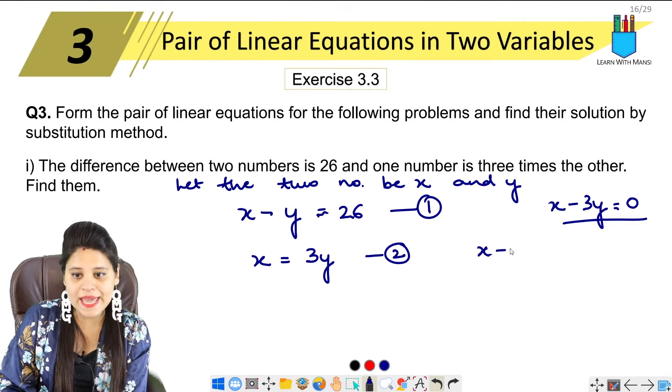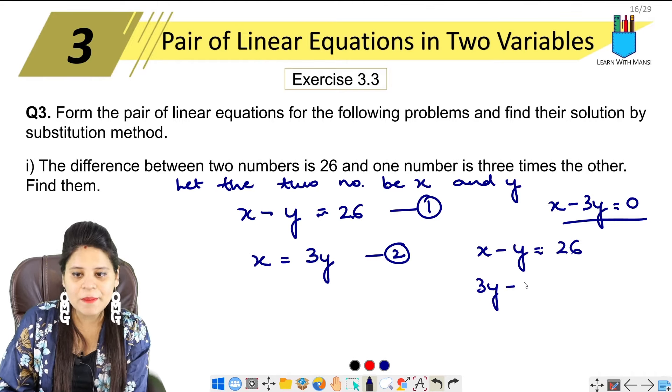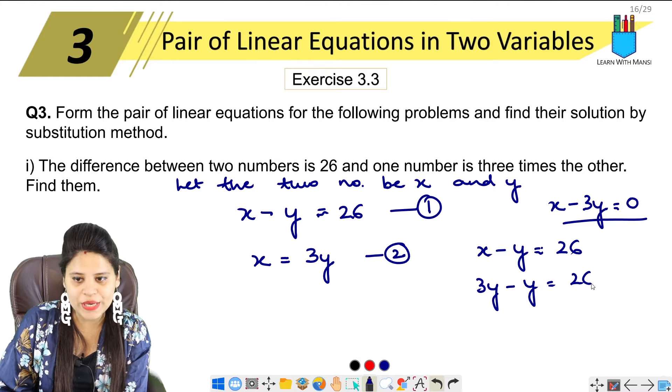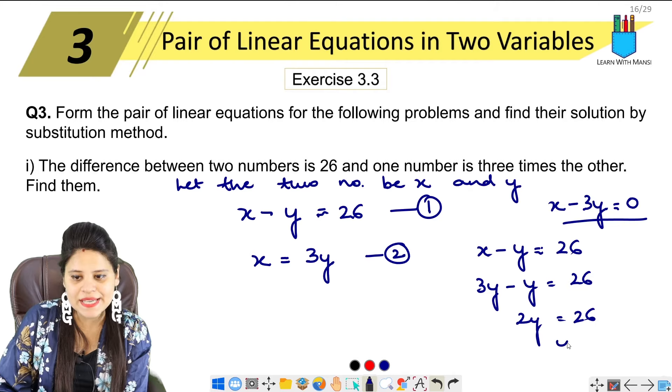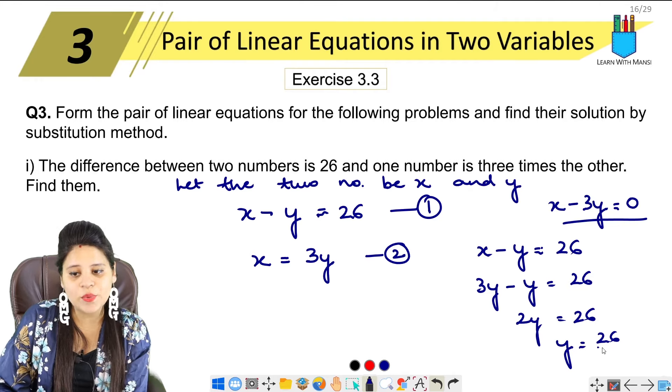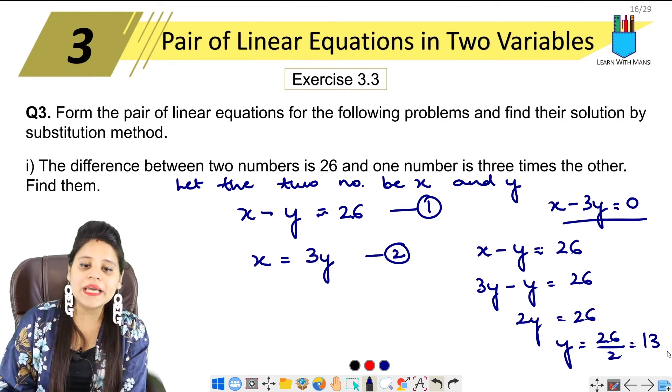We have x minus y equals 26. x is 3y, so 3y minus y equals 26. That's 2y equals 26. y equals 26 divided by 2, which is 13.